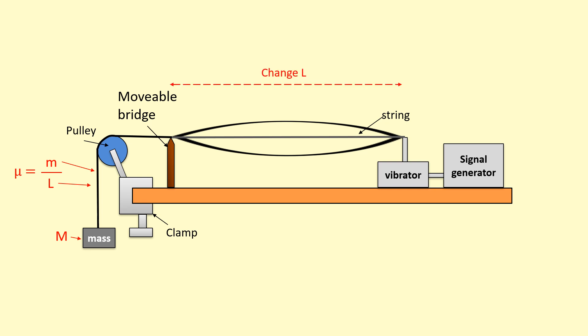Our independent variable, the thing that we change, is going to be the length. So we're going to move the movable bridge along and we're going to let it form a harmonic like this. So this is the first harmonic and we're going to measure the frequency at which this harmonic is formed. So our independent variable is the length and we're going to measure the frequency as our dependent variable.